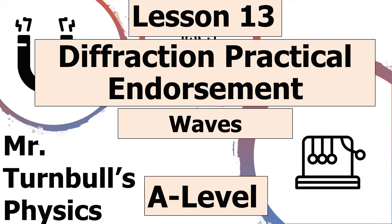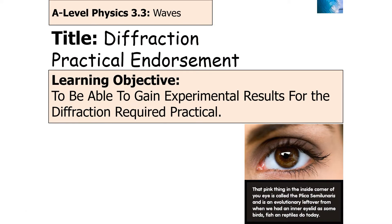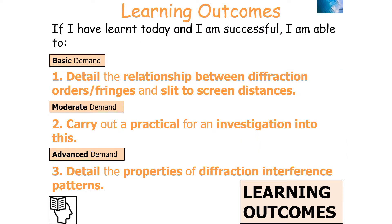Hello and welcome to this lesson in the Waves topic of AQA A-level physics on the diffraction practical endorsement. In today's lesson we're going to look at how you can gain experimental results for the diffraction practical endorsement. By the end, we should be able to detail the relationship between diffraction orders and fringes and the slit-to-screen distance, understand how to carry out the practical, and detail the properties of the diffraction interference patterns produced.